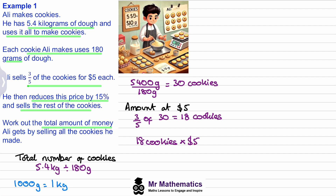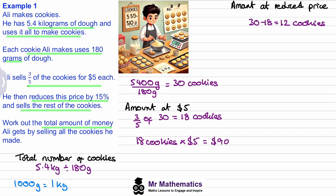We multiply the 18 cookies by five dollars and we get a total of 90 dollars. Then we're told he reduces his price by 15 percent and sells the rest of the cookies. If he made 30 and sold 18 at five dollars, we subtract 18 from 30, which gives us 12 cookies left over.